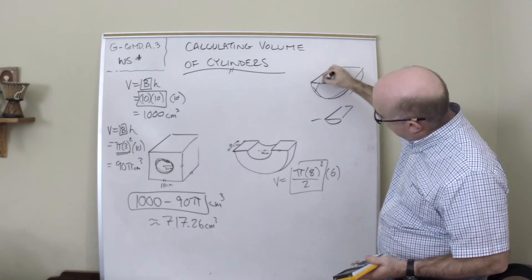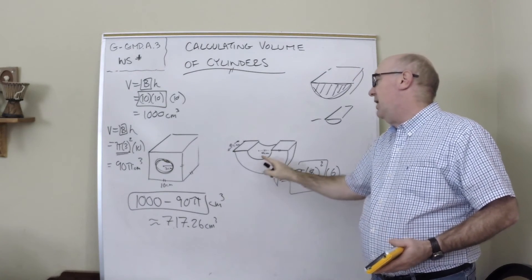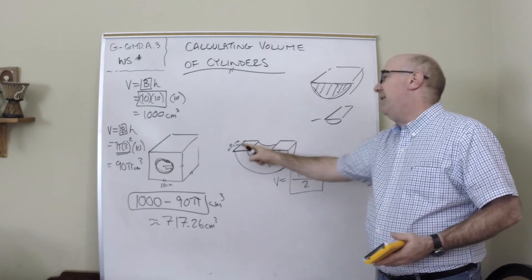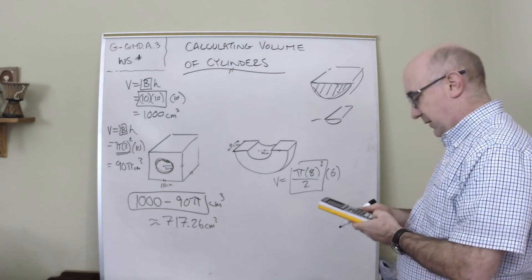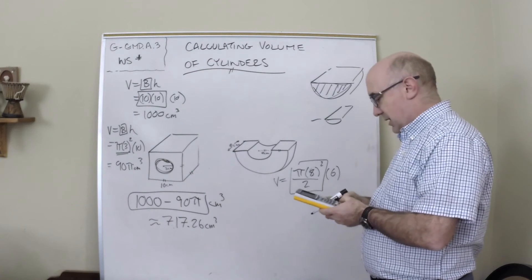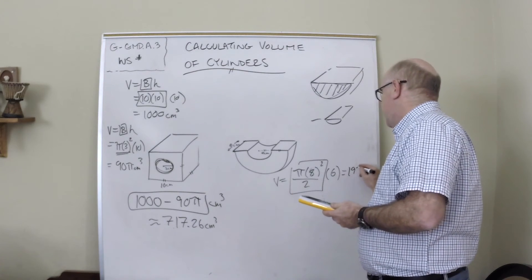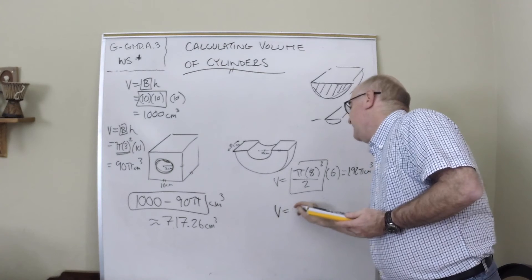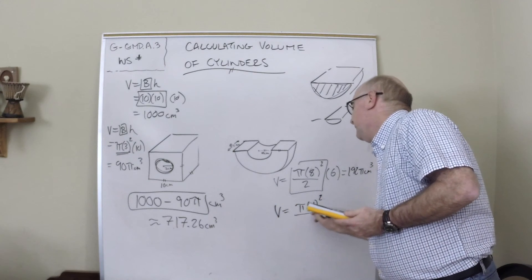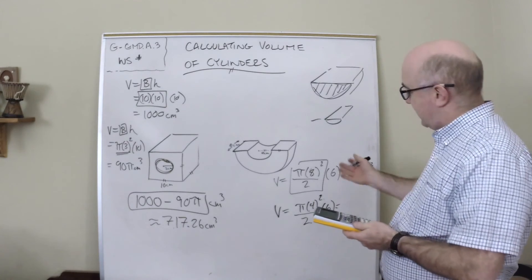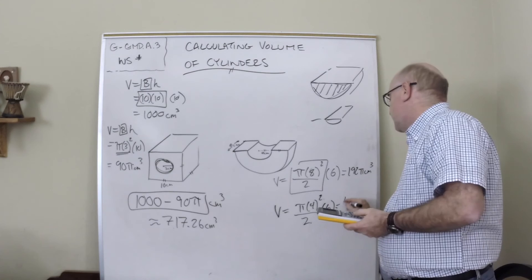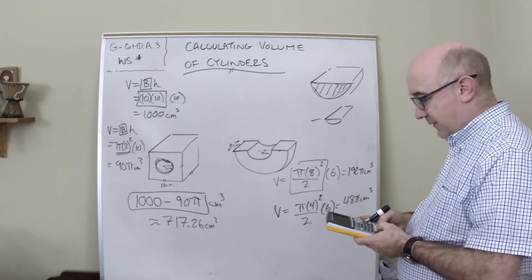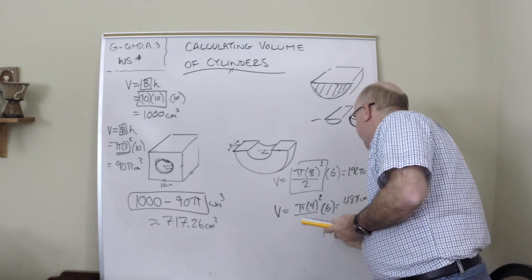It's half of the circle, that's why this is here. π(8²)—4 and 4 make 8—squared, and then the height is this. This comes out to be 64 divided by 2 times 6, which is 192π. But we have to subtract out this guy here. That guy is πr²/2 also times 6. We get 16 divided by 2 is 8, 8 times 6 is 48π. So I'm going to subtract from 192π subtract 48π, and I get 144π centimeters cubed.